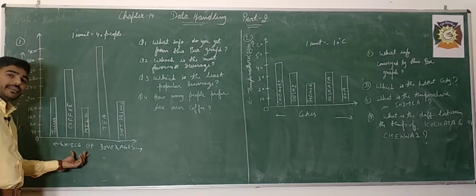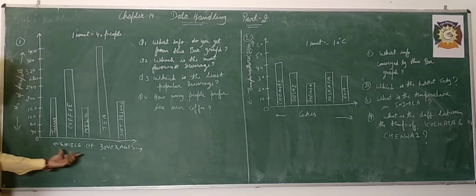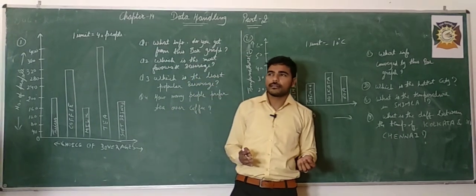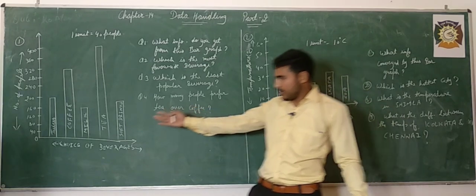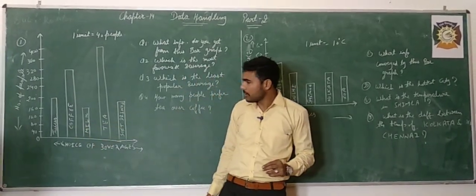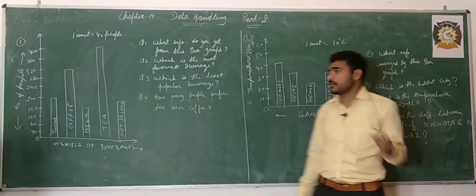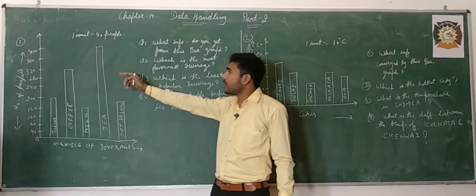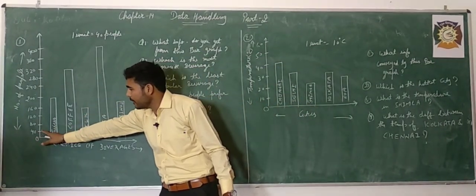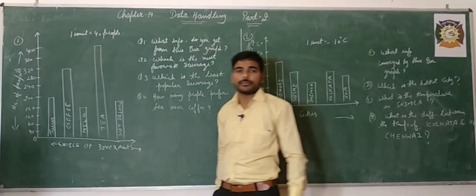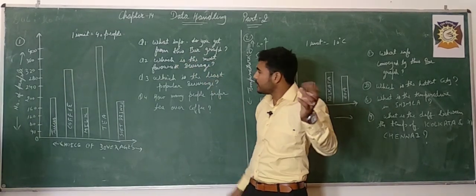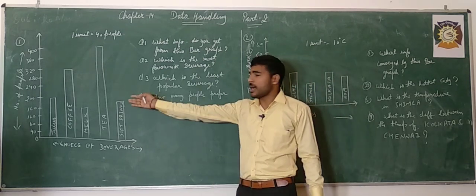Question number one. It is the bar graph of choice of beverages and number of people. This bar graph tells us how many people like which type of beverage, such as juice, coffee, milk, tea, or soft drinks. Note that 1 unit is equal to 40 people. Now, what information do you get from this bar graph?